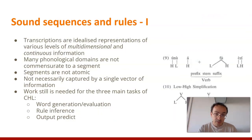Important things to remember about the differences is that phonological and phonetic transcriptions are idealized representations of various levels of multi-dimension and continuous information, meaning that many phonological domains are not commensurate, they cannot be reduced to a segment, and that segments are not necessarily atomic, which means that a single vector of information cannot necessarily capture all the information we need.